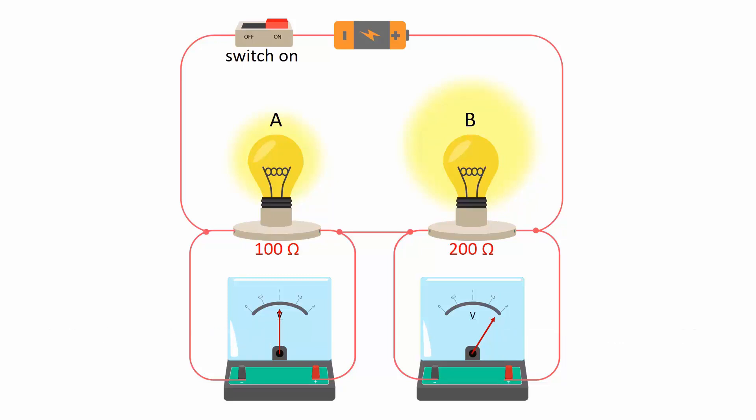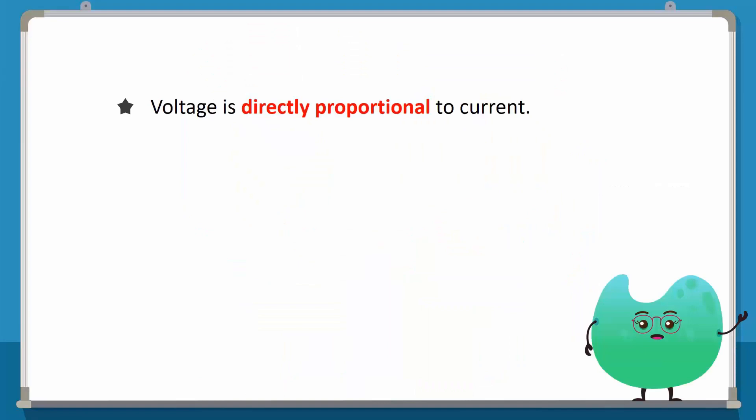We can conclude that the higher the resistance, the higher the voltage. In other words, voltage and resistance are directly proportional.